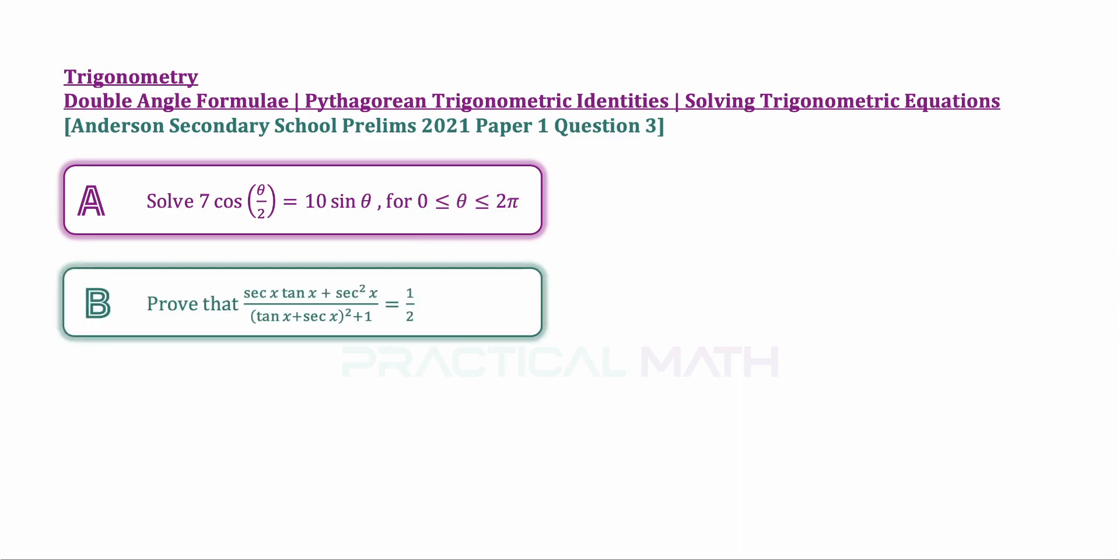In a separate part B question, you are to prove that a fraction with numerator of secant x tangent x plus secant square x over the denominator of bracket tangent x plus secant x close bracket power of 2 plus 1 equals one half.